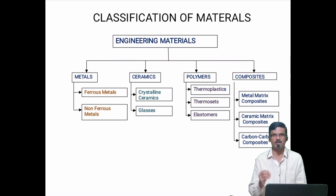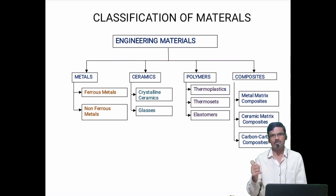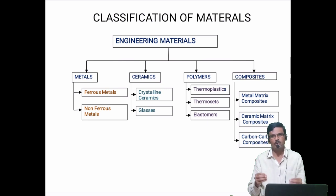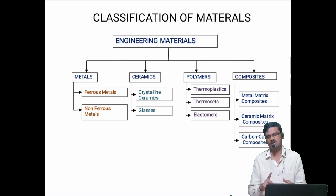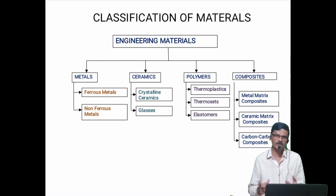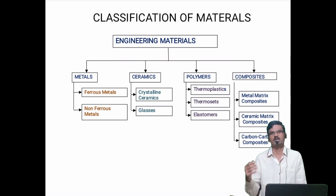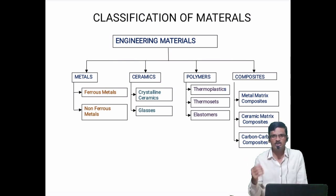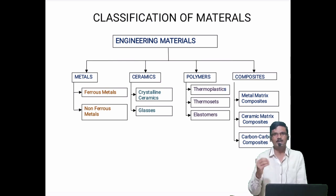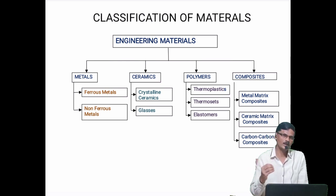Composite materials are made for special applications. Whenever we want a material with special properties that are not available in metallic, ceramic, or polymeric materials, or whenever we want properties better than any of these, we go for composite materials, where we can tailor-make the material for a particular application.